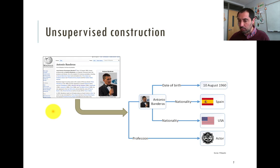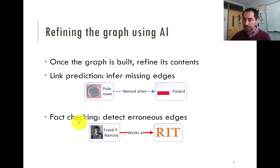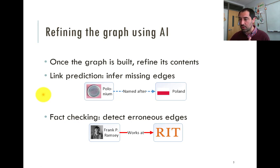We are working with knowledge graphs, and knowledge graphs are these days very popular, mainly because of the unsupervised construction. Basically there is usually a natural language text, and then it is translated into a knowledge graph somehow. Because of this process, there are usually issues on how the knowledge graph is built. The idea is that we would like to refine the graph using artificial intelligence — using machine learning in this case.